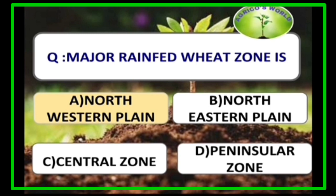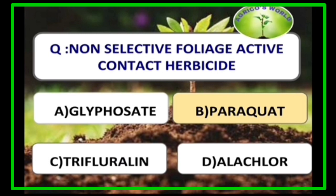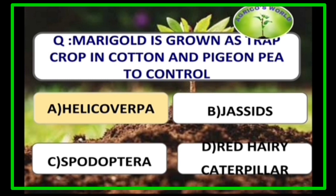The major rain-fed weed zone is the north-western plain. 2,4-D is a selective herbicide for wheat crop and is the most commonly used herbicide in wheat. A non-selective foliage-active contact herbicide is paraquat. Marigold is grown as a trap crop in cotton and groundnut to control Helicoverpa armigera.